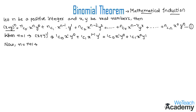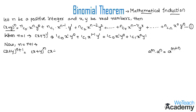On substituting n + 1, the LHS becomes (x + y)^(n+1). We observe that this is in the form a^m · a^n = a^(m+n), so we can write it as (x + y)^n · (x + y). Now let us expand (x + y)^n using the given statement.